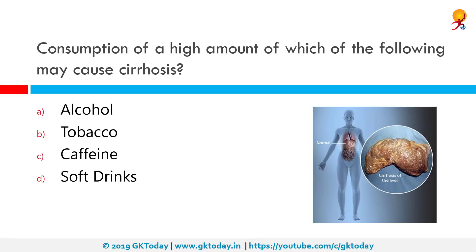Consumption of a high amount of which of the following may cause cirrhosis? The correct answer is alcohol. Alcoholic cirrhosis develops in between 10% and 20% of individuals who drink heavily for a decade or more.